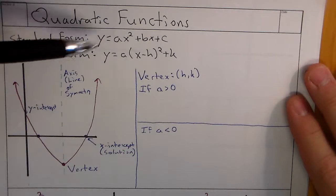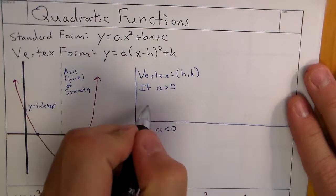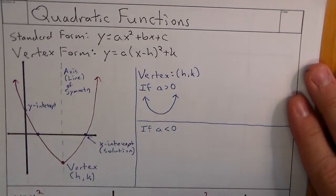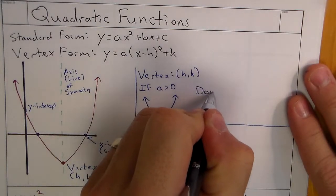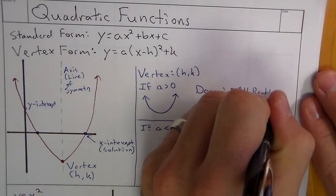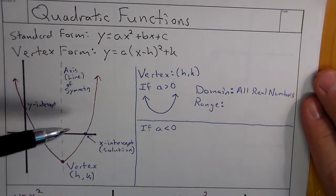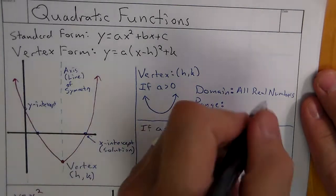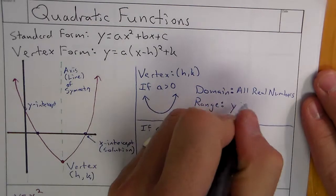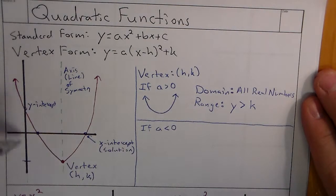For vertex form, we refer to the vertex as (h, k). If a is greater than zero — the leading coefficient — the parabola opens up. When that occurs, the domain, which is all x-values that work within the quadratic function, will be all real numbers. The range, the y-values that exist within the function, will not be all real numbers. The y-values below the vertex don't exist, so the range is y-values greater than or equal to k, the y-value of the vertex.